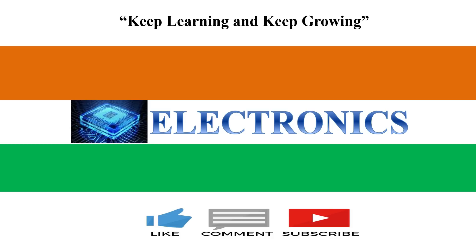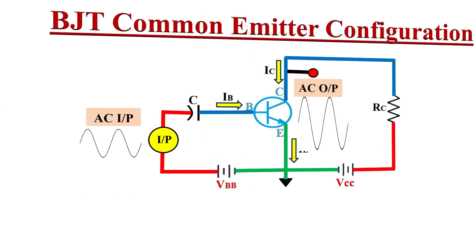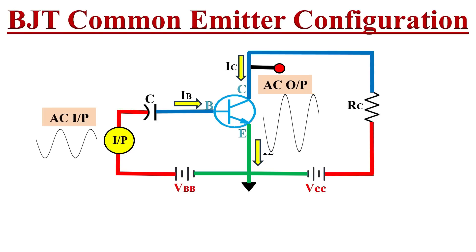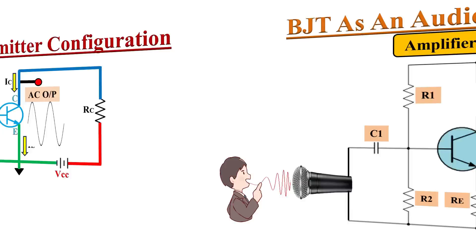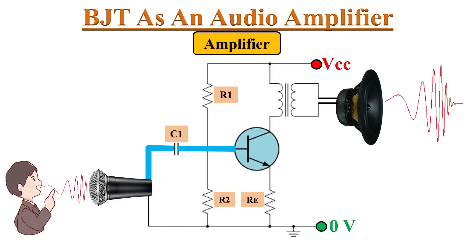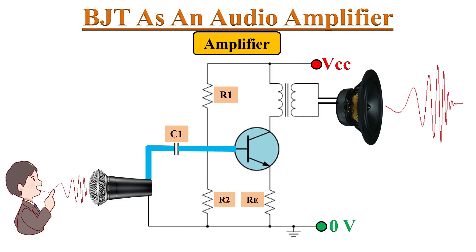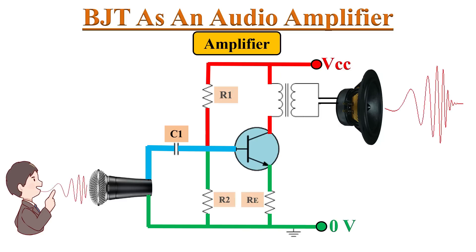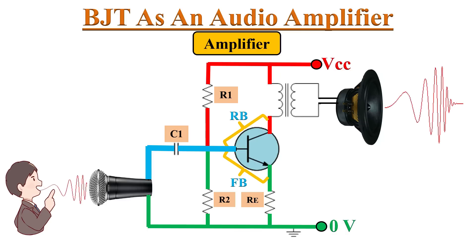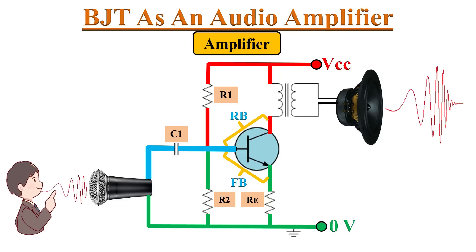Hello friends, welcome to YouTube channel Electronics. In this video, we will learn common emitter configuration of BJT. Whenever the BJT is used as an amplifier, most of the times it is used in common emitter configuration. In this single stage common emitter audio amplifier circuit, the input signal is applied at the base terminal of the BJT, and biasing resistors R1, R2, and RE provide biasing to the transistor. Biasing is very important in amplifier design, as it establishes the current operating conditions of the transistor to amplify the input signal.